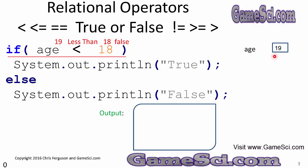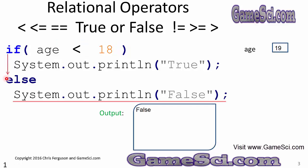We'll set up 19 in the age variable and look first at the less than operator. With 19 in the age variable, 19 less than 18 is a false statement — always has been, always will be. 19 is not less than 18. Because that condition is false, the code is going to go straight to the else, execute the else portion, and you can see it prints the word false onto the output.